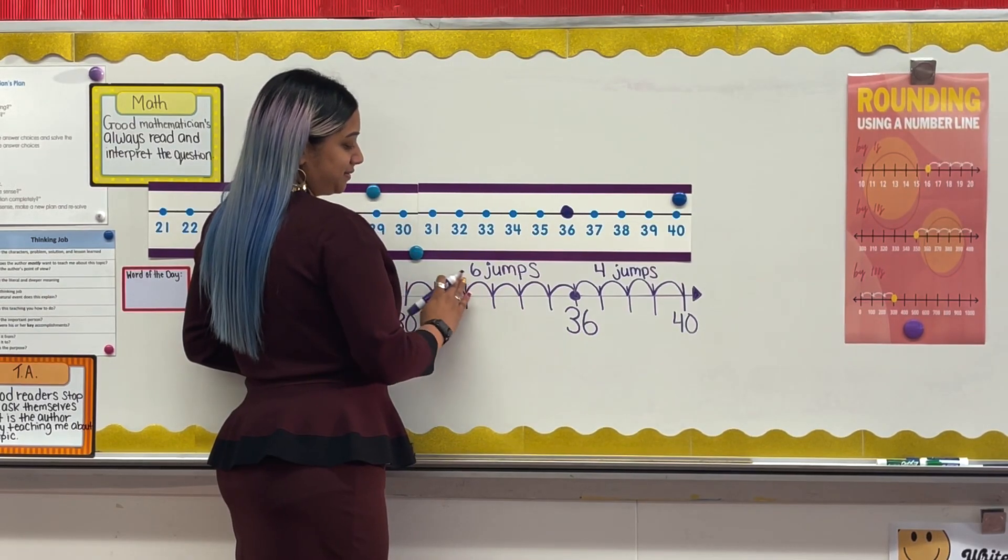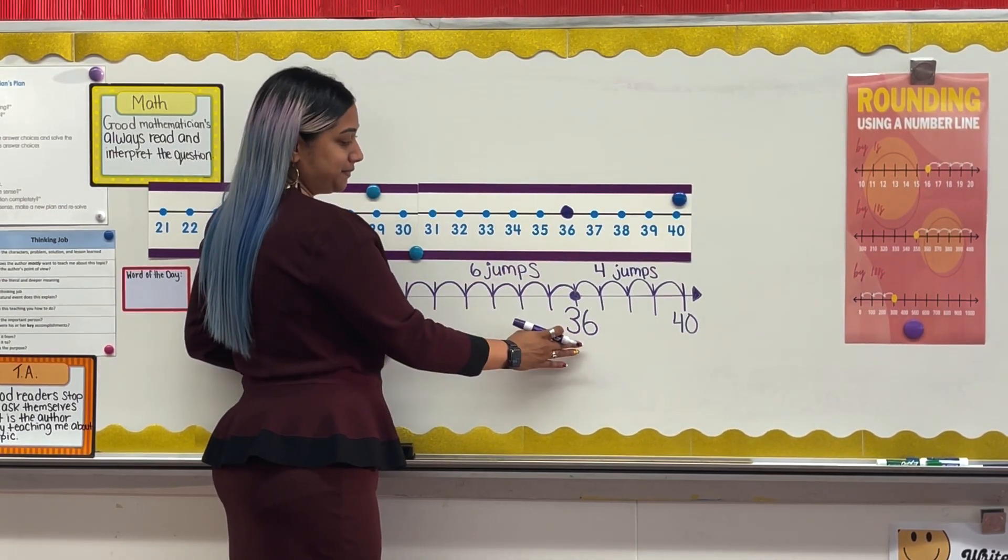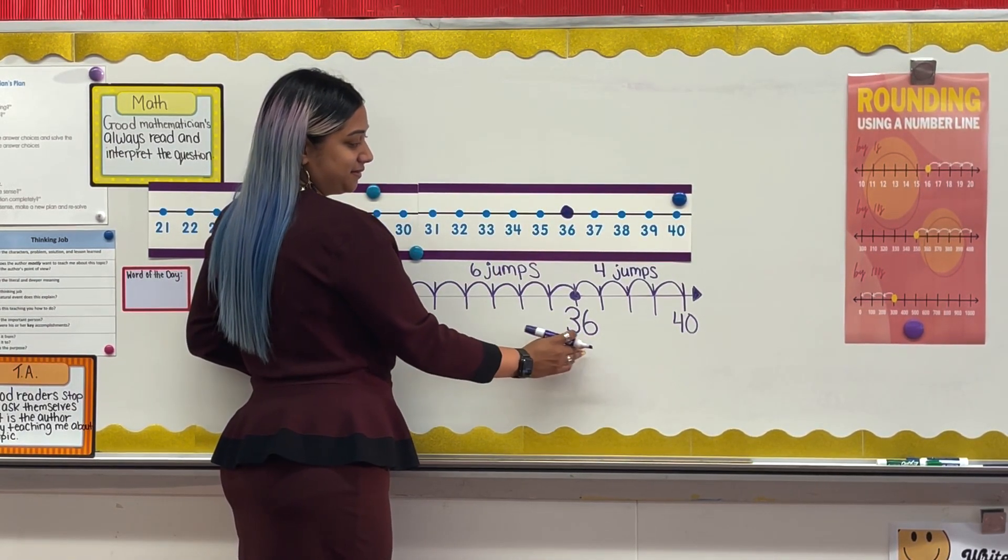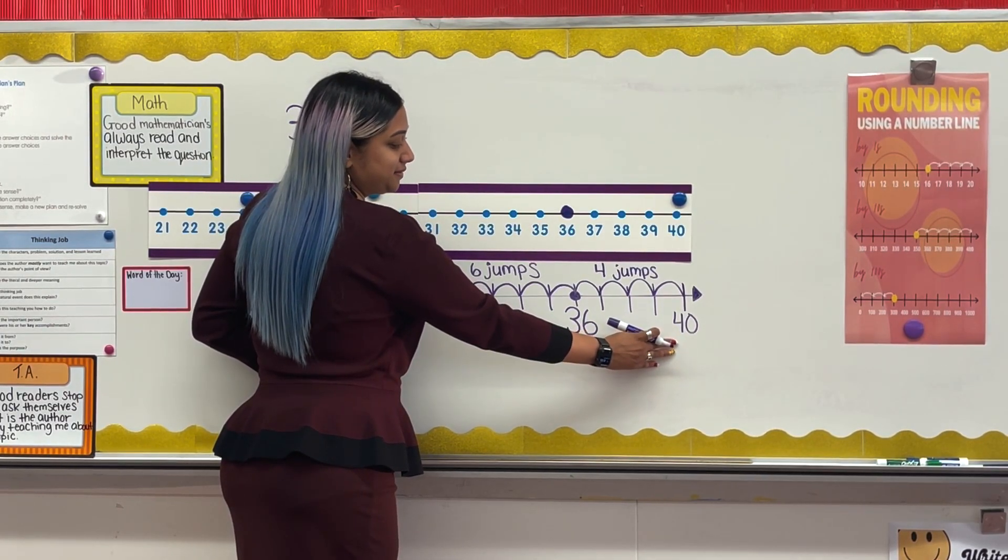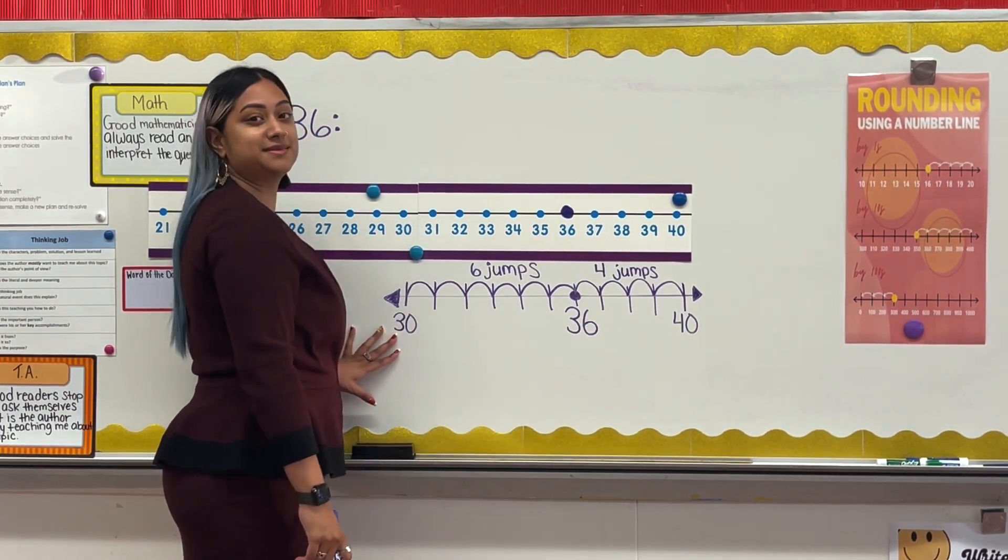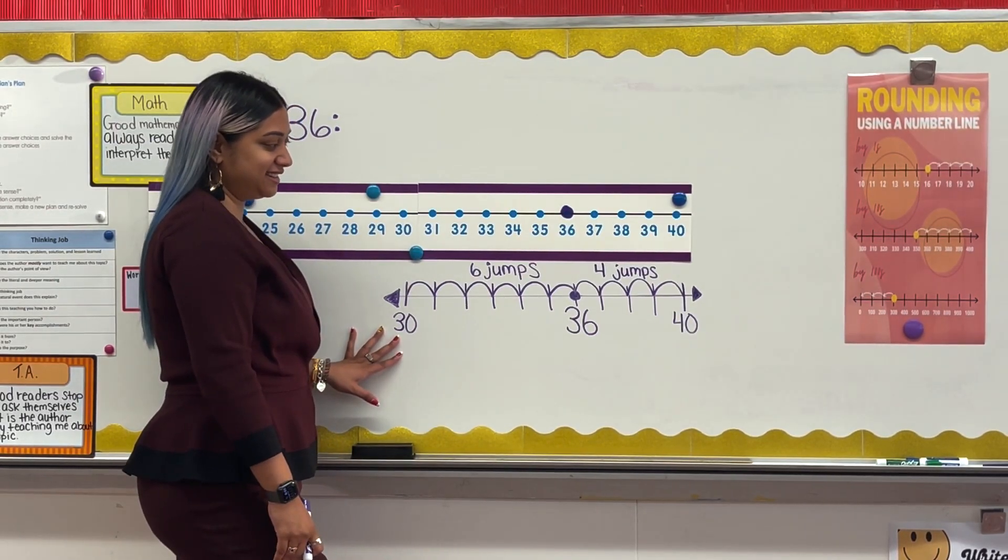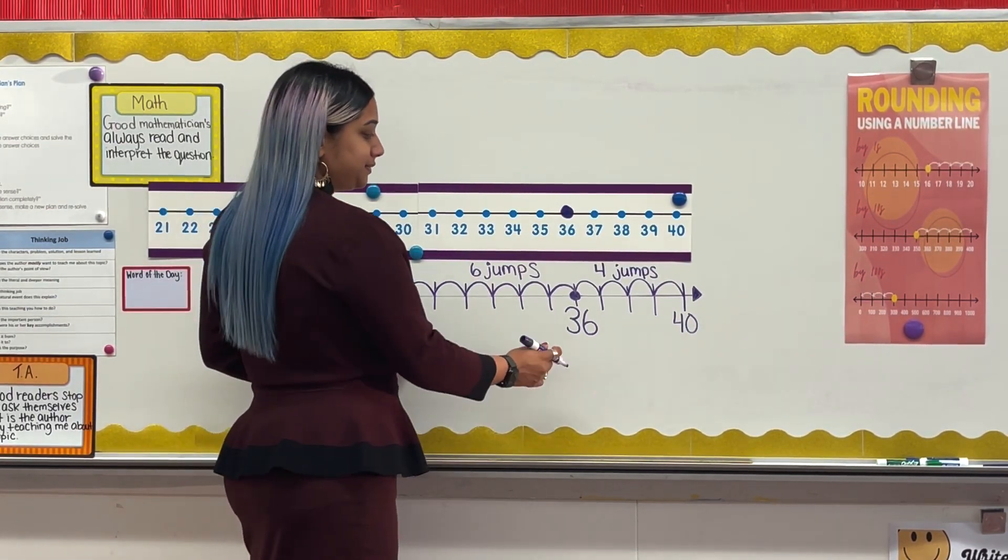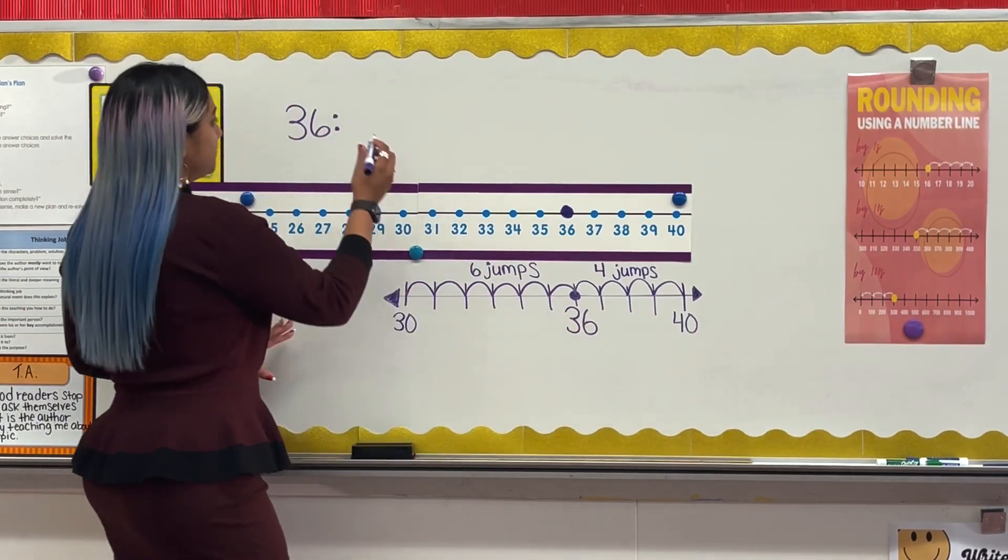The fewer the tick marks, the closer the number is to that interval. So therefore, 36 rounds to 40 because it only took me four jumps from 36 to 40, whereas from 30 to 36, it took me six jumps.